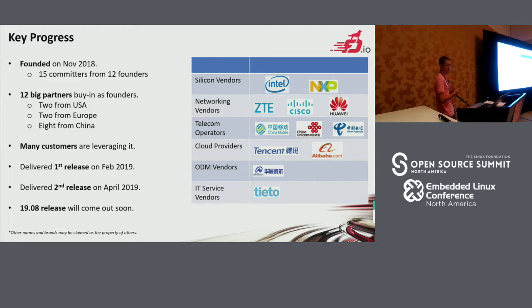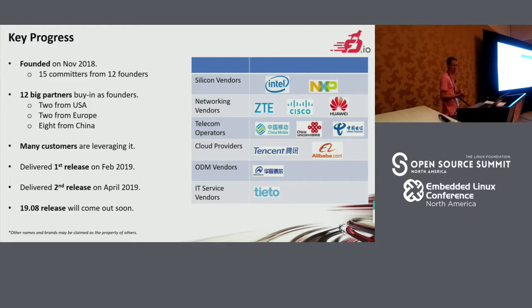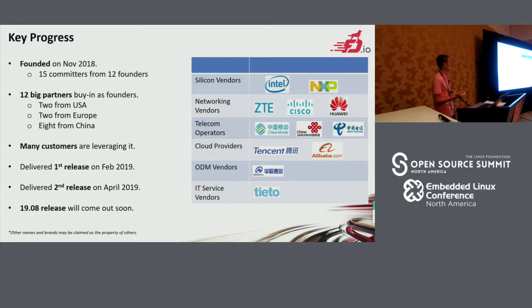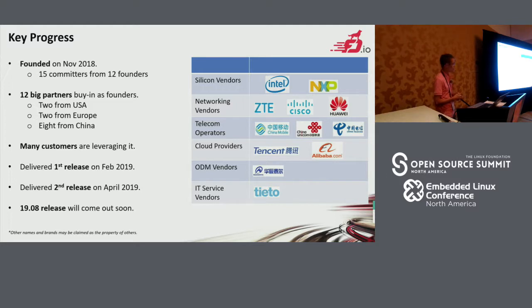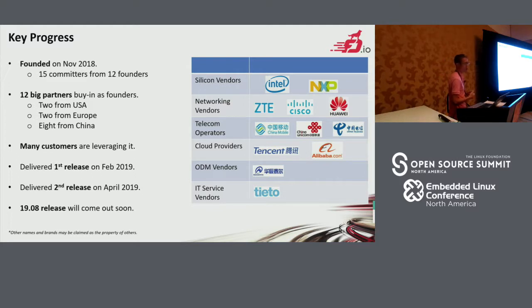For telecom operators, there are China Mobile, China Unicom, and China Telecom. For cloud providers, there are Tessence and Alibaba. For ODM vendors, there is Hasential, and for IT server vendors, there is Teatro. Even though it was created last November, many customers are already leveraging it in their products. We delivered our first release in February, and the second release in April. The next 1908 release will be coming soon, by the end of this month.